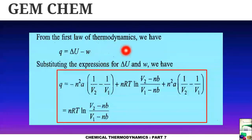Now for the first law of thermodynamics we have known that q equals to delta U minus w. So if we substitute the expression of delta U and w, we have the following expression for q. Just mere substitution is being done, so q comes to be as nRT ln V2 minus nb divided by V1 minus nb.